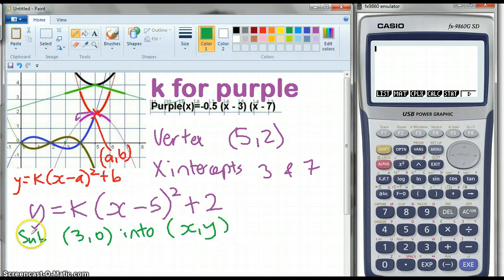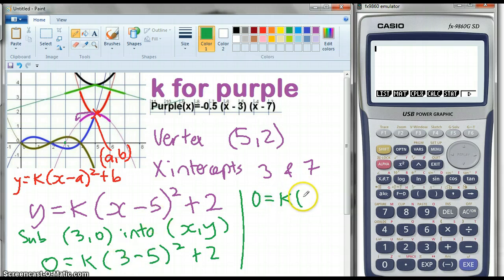So the y is 0, so 0 equals k. x is 3, so 3 minus 5 squared plus 2. Now I have to solve for k. So I have got, just moving up here, 0 equals k(3 minus 5) is negative 2 squared plus 2.